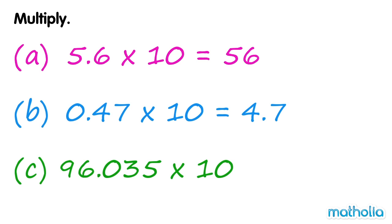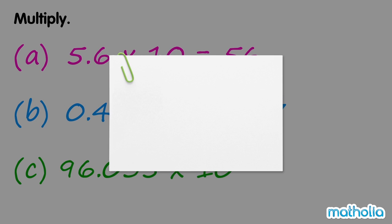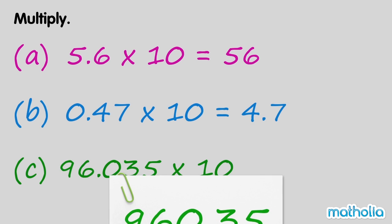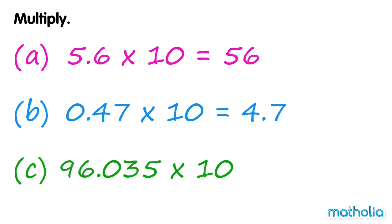c. Find 96.035 times 10. Shifting the decimal point one place to the right gives us 960.35. So 96.035 times 10 equals 960.35.